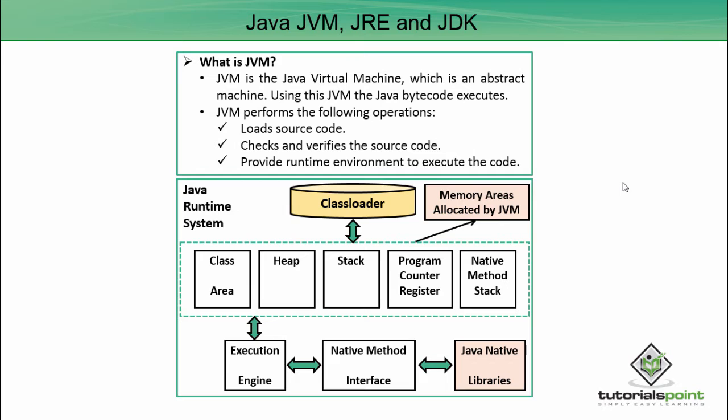Starting with JVM: the Java Virtual Machine is an abstract machine, and using this JVM the Java bytecode executes. JVM performs the following operations: it loads the source code, checks and verifies the source code, it executes the code, and provides a runtime environment.